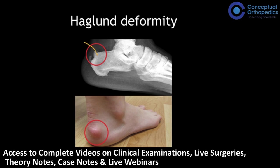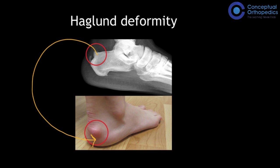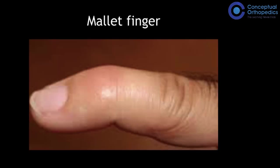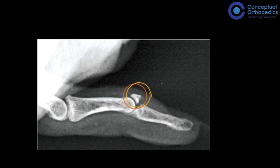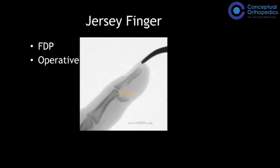A prominent calcaneal tuberosity with overlying bursitis on the posterior aspect of the calcaneum is called Haglund's deformity. Mallet finger is an avulsion of the extensor tendon from the distal phalanx — it can be bony, soft tissue, or both — and is treated conservatively with a mallet splint for six to eight weeks. Its counterpart, jersey finger, is an avulsion of the flexor digitorum profundus from the distal phalanx (zone one injury) and is usually treated operatively.